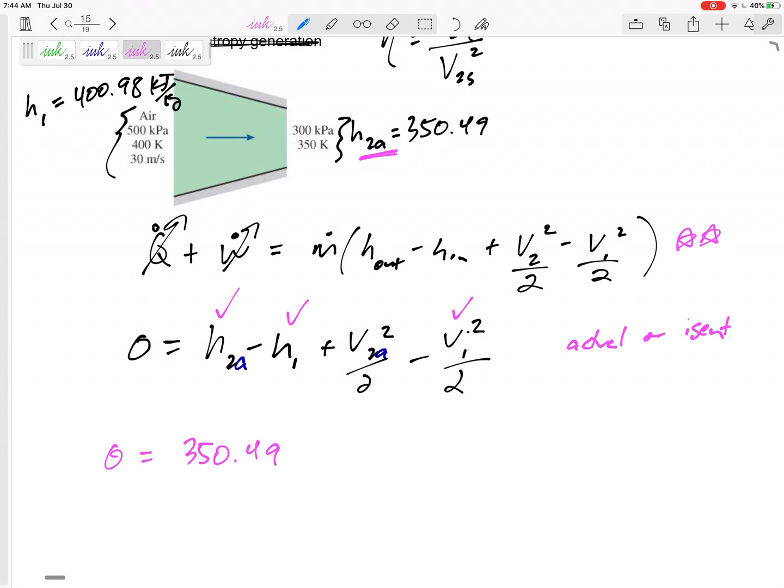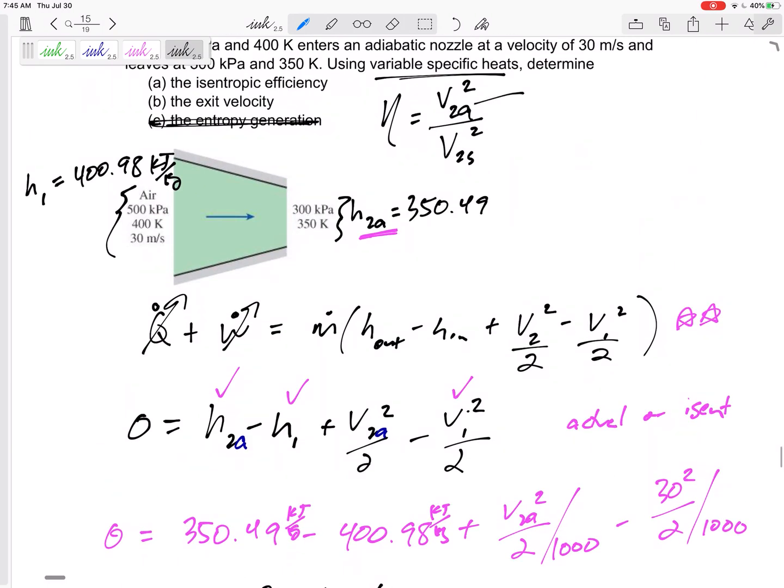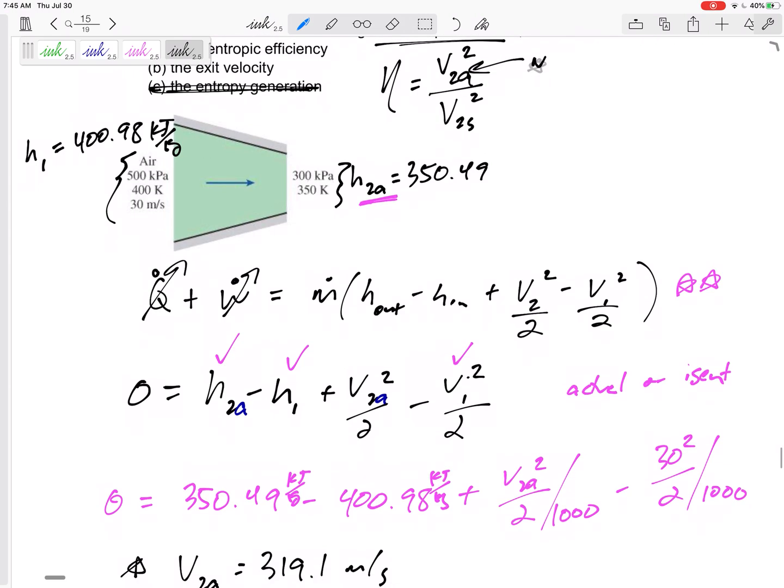The h2 actual 350.49 minus h1 400.98 kilojoules per kilogram plus v2 actual squared over 2. Because these are kilojoules per kilogram, I need to divide by 1000, minus v1 30 squared over 2 divided by 1000. v2 actual equals 319.1 meters per second. There we go, I've got v2 actual.